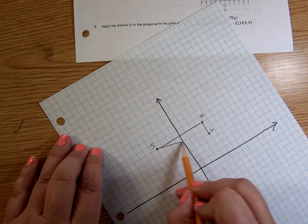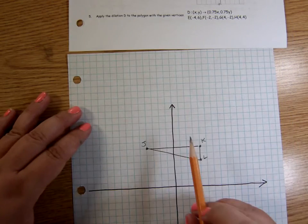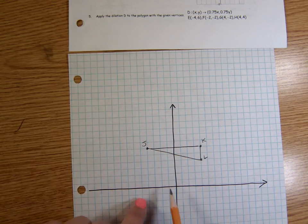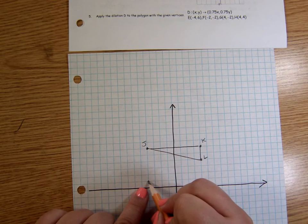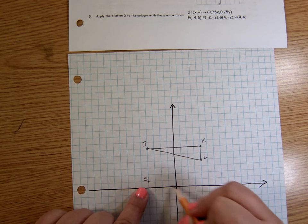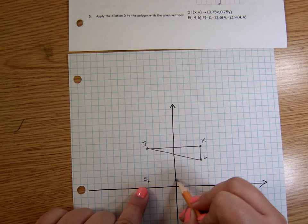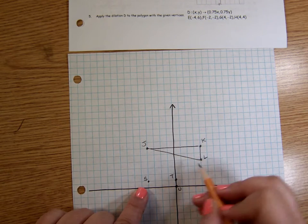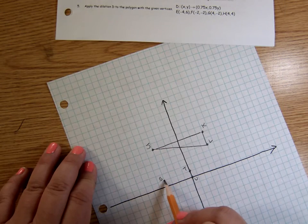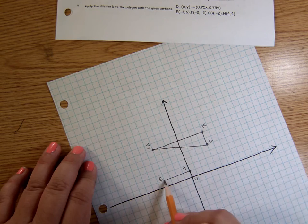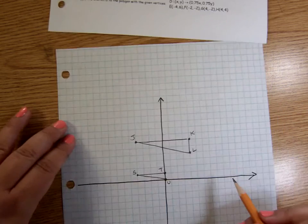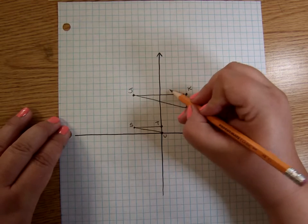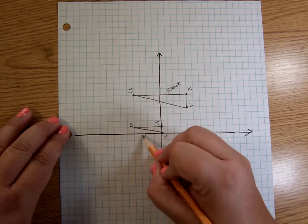Okay. And then the next one is S, T, U. S, T, U is negative 4, 1 is S. T is 0, 1. And U is 0, 0. So S, T, U is down here. Okay. So if I have to figure out a dilation first and then a translation that goes from here to here. So this is my starting one. And this is my ending one.